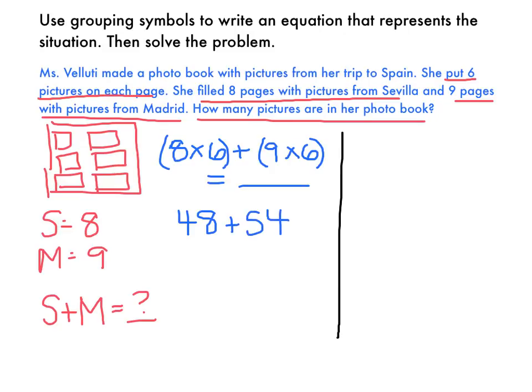So if I add 48 plus 54 together, 40 plus 50 is 90, and 8 plus 4 is 12. 90 plus 12 is 102. So I would get 102 pictures.